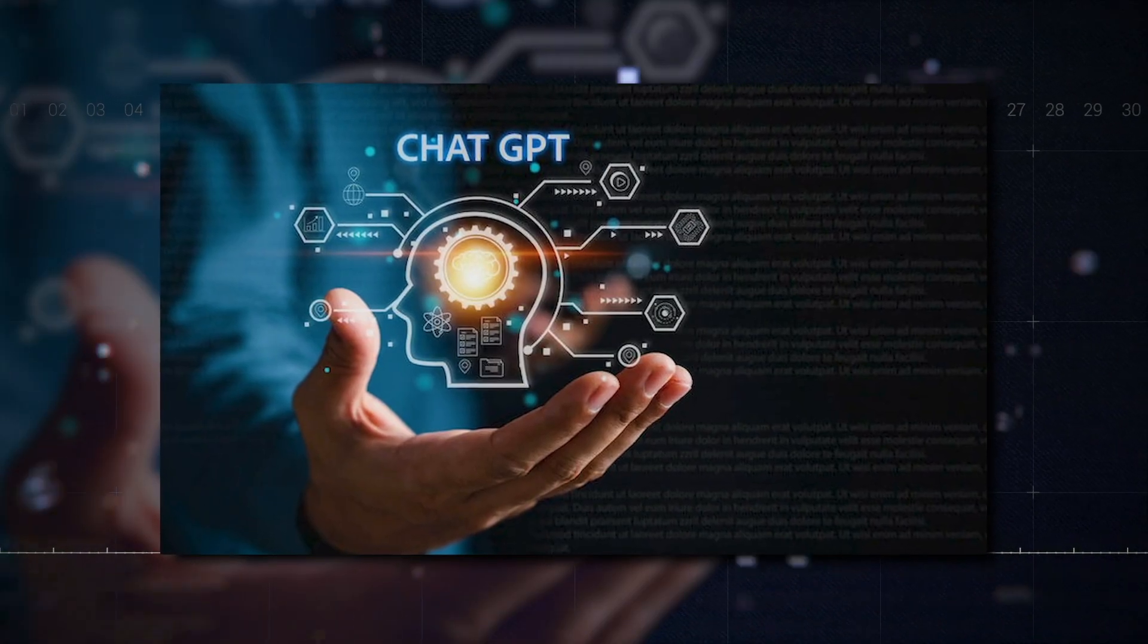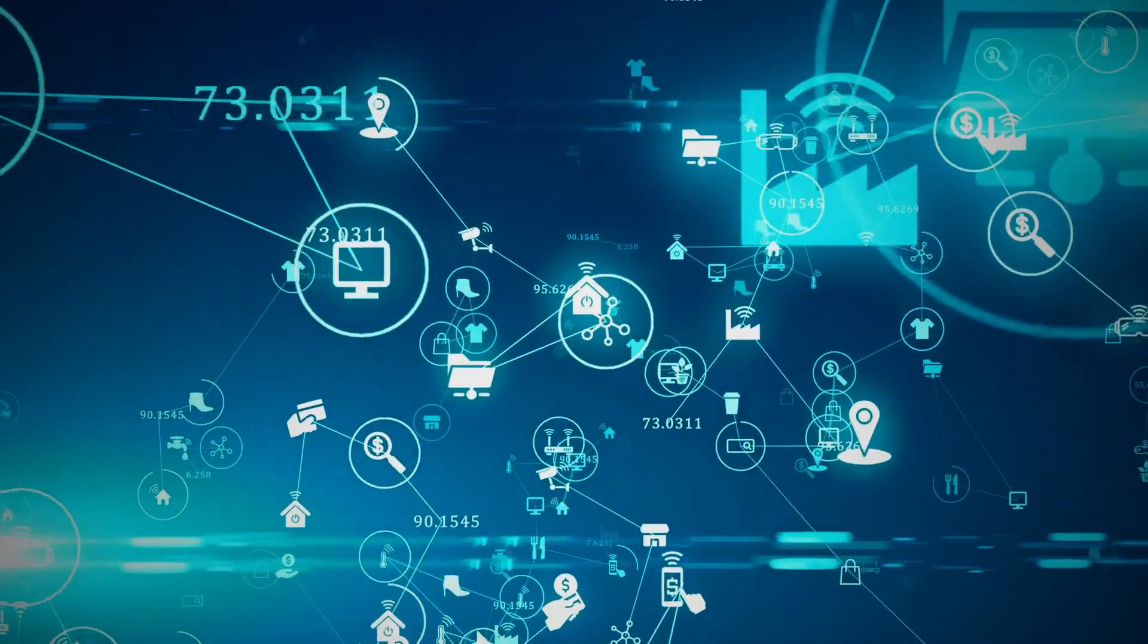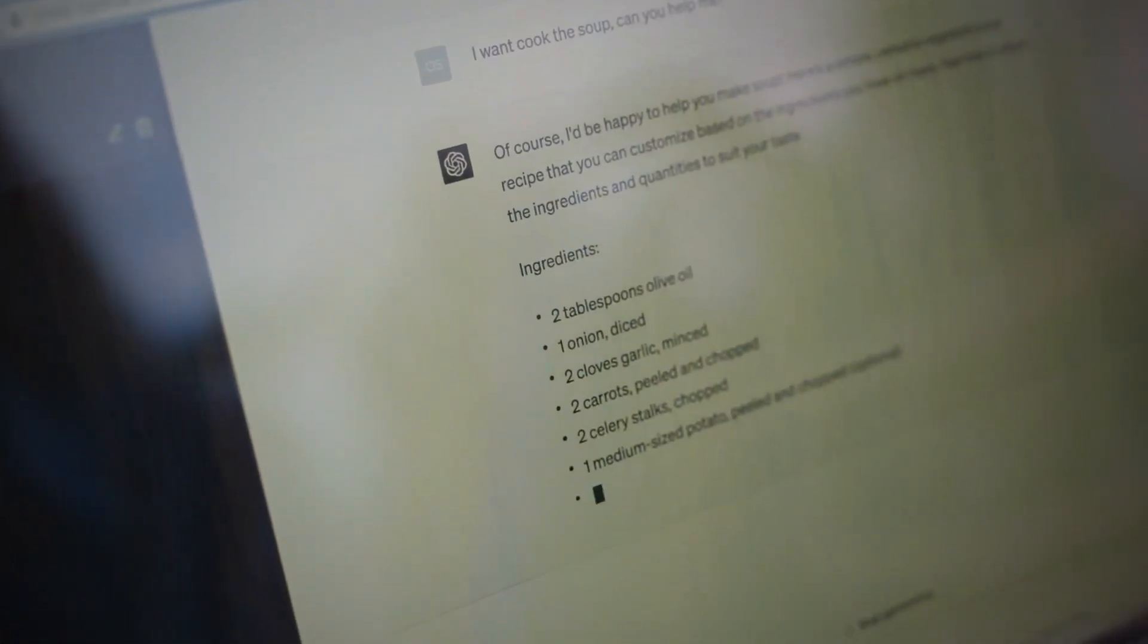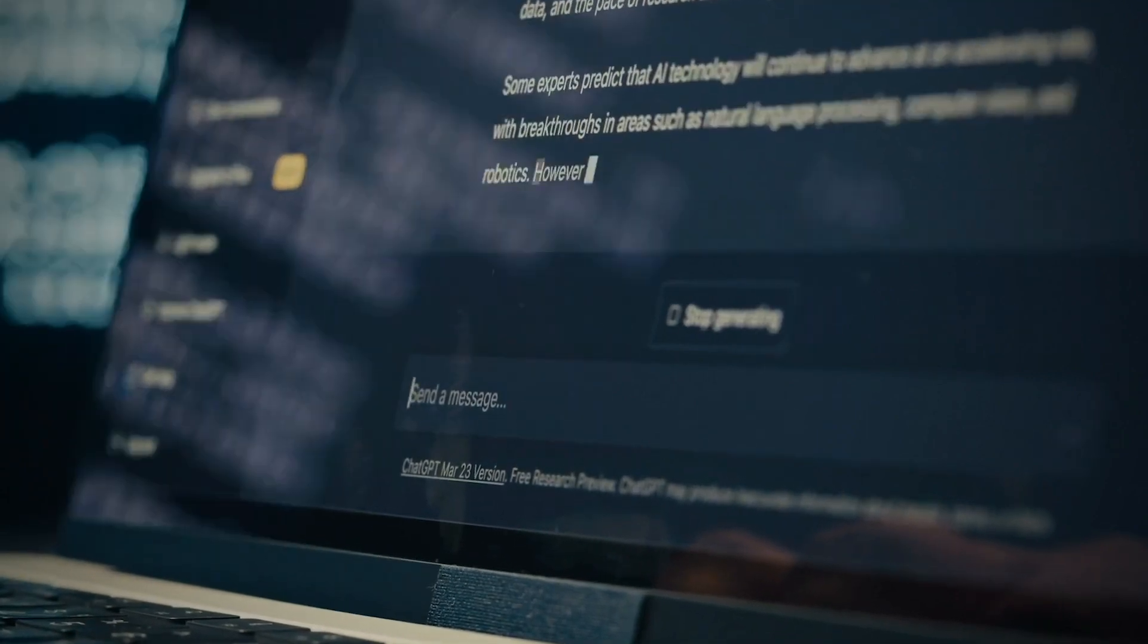Think of ChatGPT as a super-smart digital friend who has read all the books and watched all the TED Talks. It uses a vast database of information, including textbooks, articles and websites to answer your questions accurately. Just type in your query and ChatGPT will serve you full-cooked solutions.